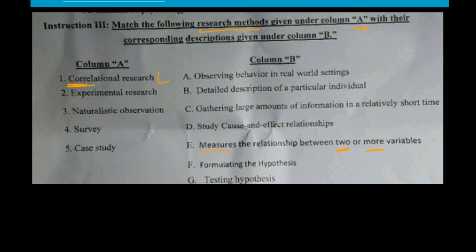Correlation is matched with measuring the relationship between two or more variables. Experimental research studies cause-and-effect relationships. Naturalistic observation involves observing behavior in a real-world setting.